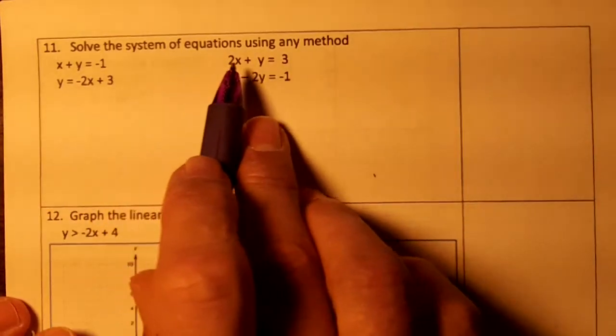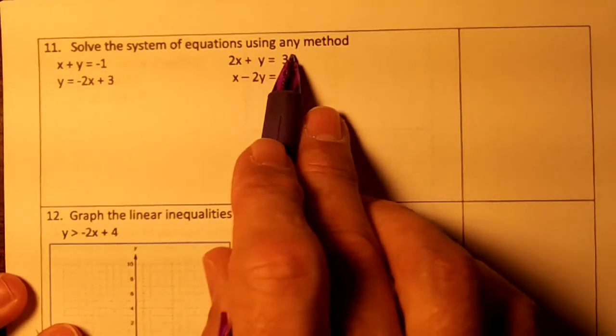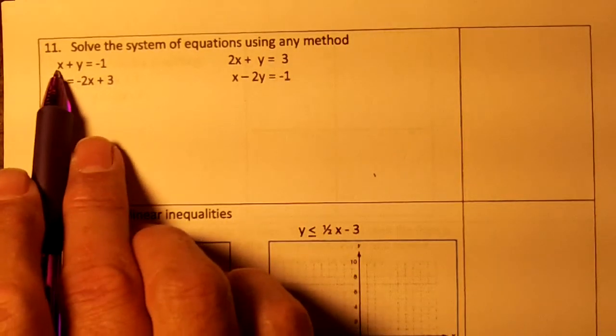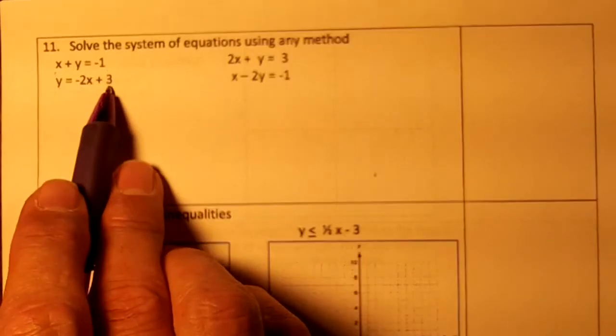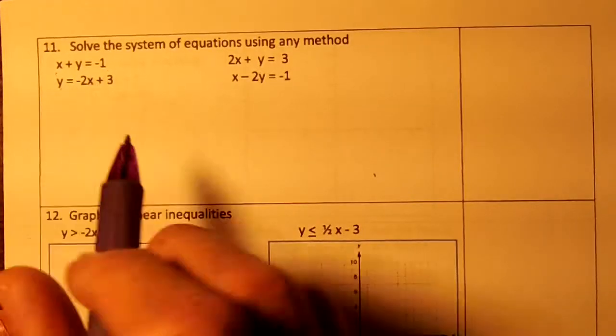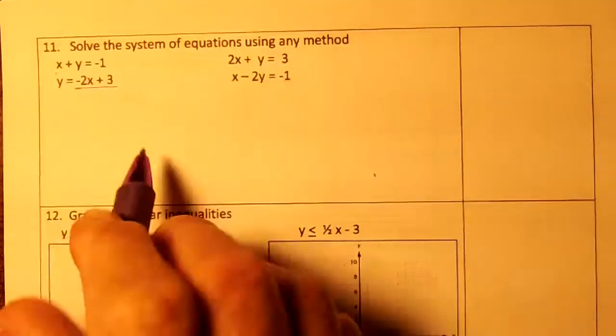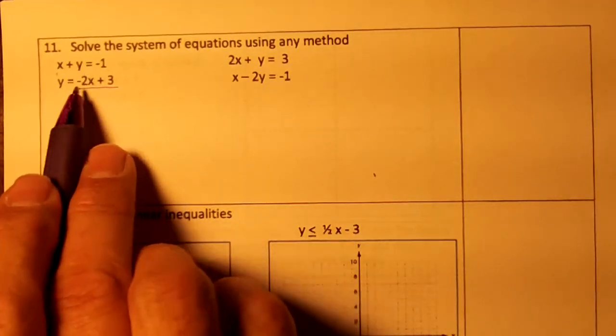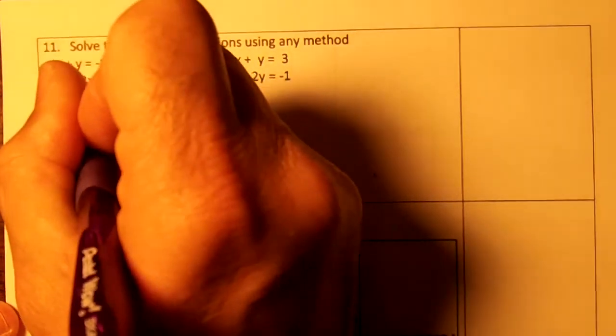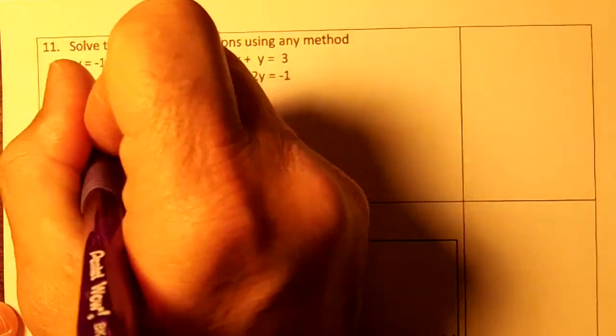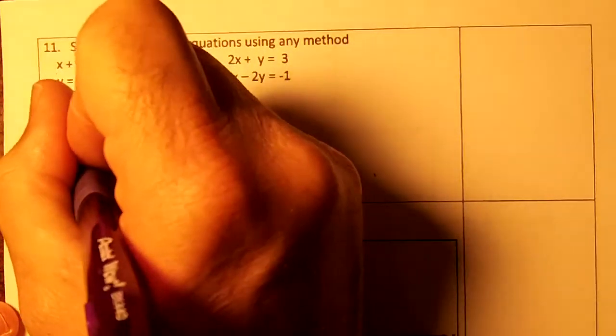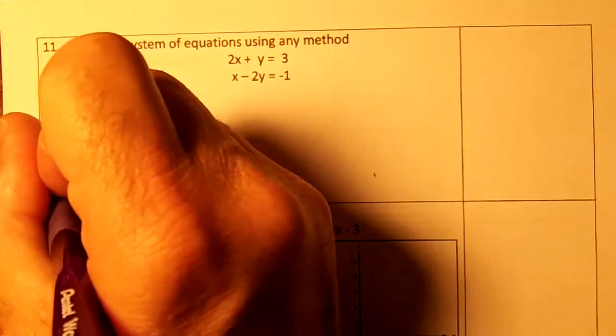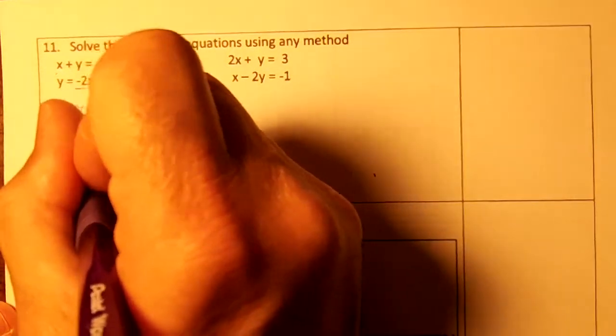Number 11, solve the system of equations using any method. On this problem, this is standard form but this is slope intercept. I know that y equals negative 2x plus 3, so I'm going to rewrite this equation and replace that y with negative 2x plus 3. So I'm going to write x plus y equals negative 1, and then I'm going to replace this y with negative 2x plus 3.